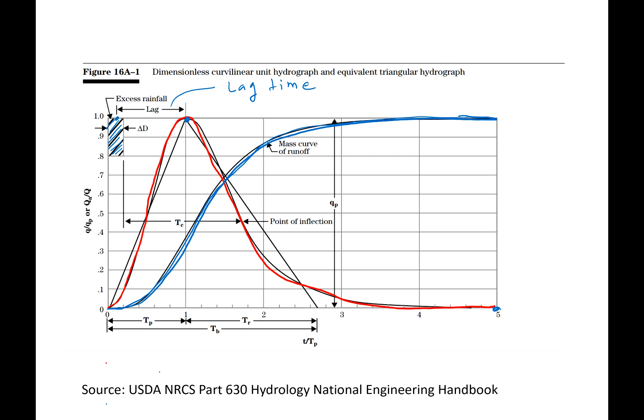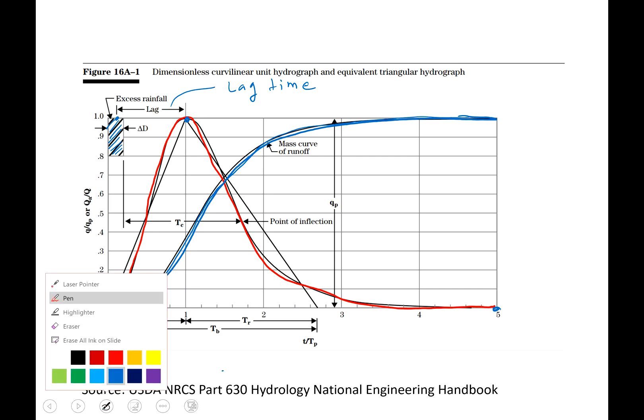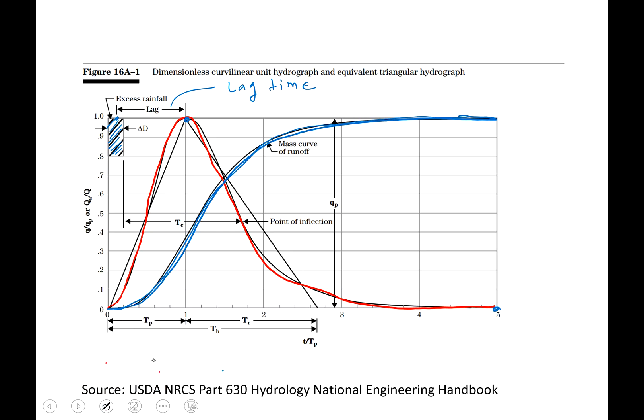The curvilinear unit hydrograph can be approximated by a triangle shown in yellow. The key idea is that the area of this triangle equals one (unit volume), and equating that area to one allows us to derive an expression for time to peak tp and peak discharge Qp.